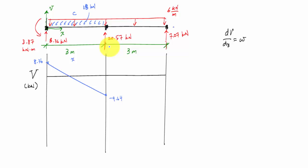Here this is constant, so again I'm decreasing linearly. And this area here is also 18 kilonewtons, so I'm going to decrease 18 down to negative 7.07. Done. And that is my shear diagram.